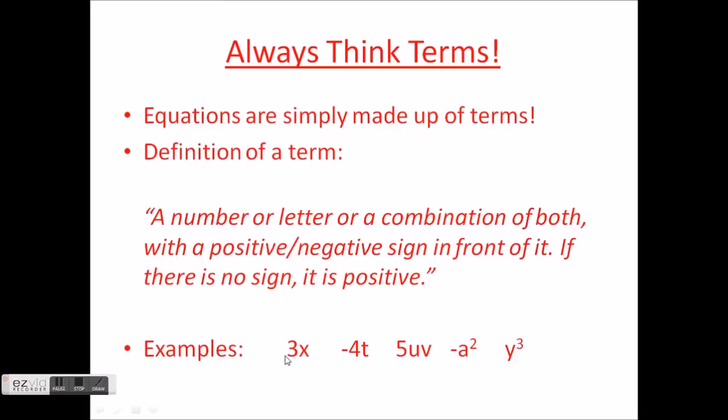Here are some examples: 3x - a number, a letter, and there's no sign in front of it, so it's positive. -4t - a number, a letter, and a negative sign in front of it. 5uv is obviously a group of numbers and letters and there's no sign in front of it, so again it's positive.